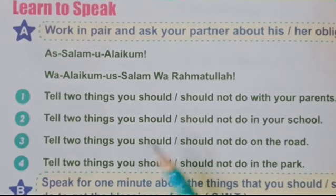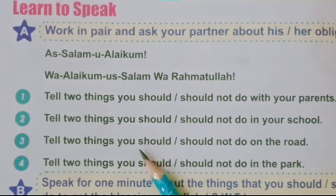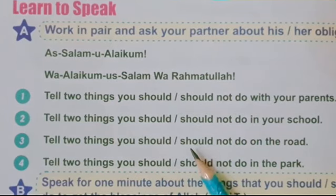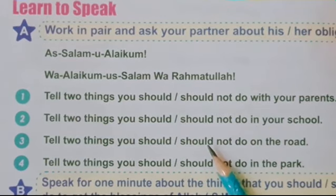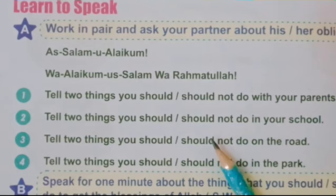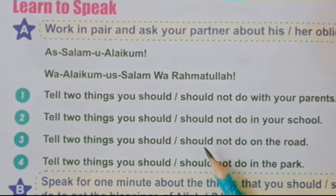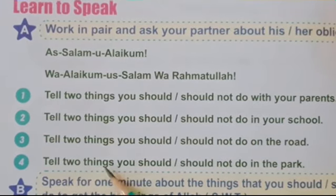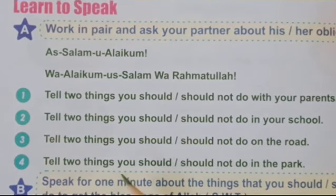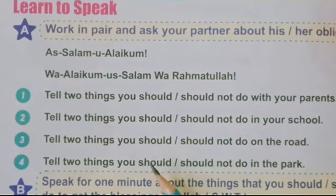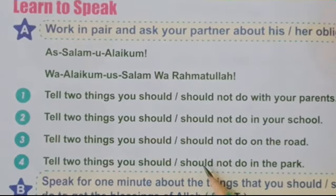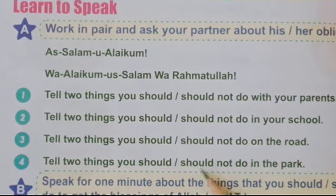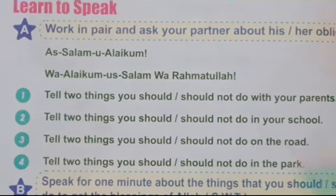Next: tell two things you should and should not do on the road. I should ride carefully on the road. I should follow traffic rules. I should not make haste on the road — make haste means to be quick, so we should be careful, not quick. I should not play on the road. Next: tell two things you should and should not do in the park. I should get some exercise in the park. I should walk in the park. I should not pluck flowers. I should not perform ablution in the park.